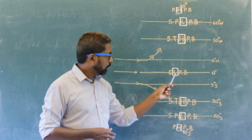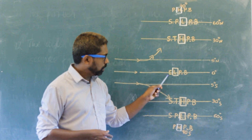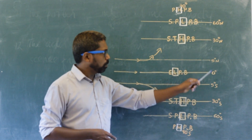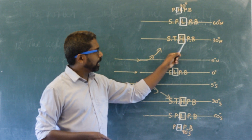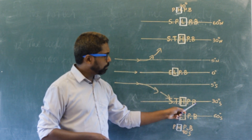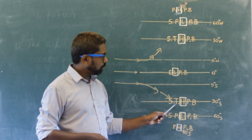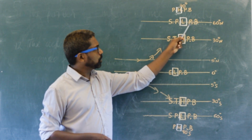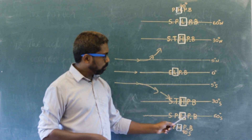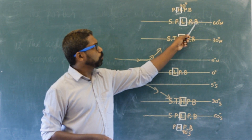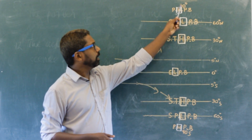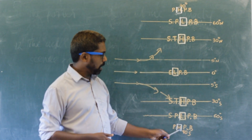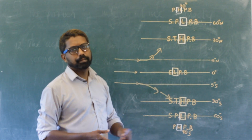Summary of pressure belts: 0 degree — equatorial low-pressure belt, between 5 degrees north and 5 degrees south. 30 degrees north and south — subtropical high-pressure belt. 60 degrees north and south — sub-polar low-pressure belt. 90 degrees north and south — polar high-pressure belt.